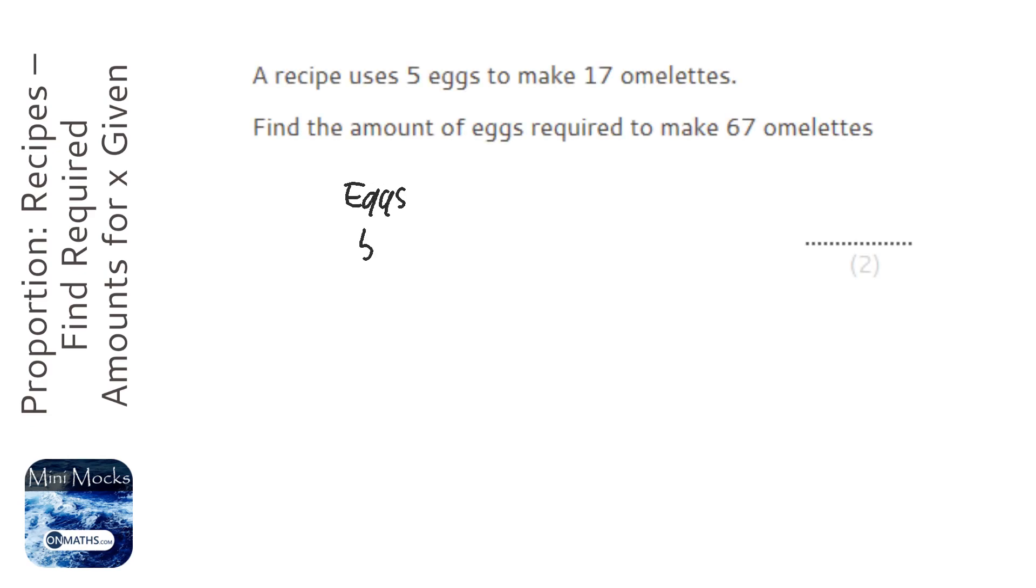OK, so we're told we are given 5 eggs to make 17 omelettes. And we're asked to find the amount of eggs required to make 67 omelettes.